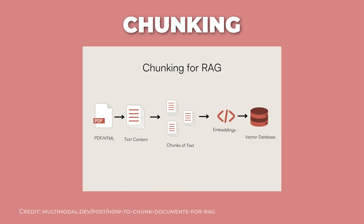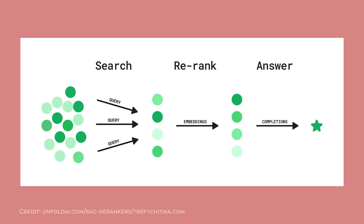Before documents go into the vector database, they get split up through chunking. You can't stuff an entire book into the model at once because of the context limit, so you break it into smaller pieces that are easier to search and process. If you go too big, you get a lot of irrelevant stuff. If you go too small, you lose important context. After finding relevant chunks, ranking puts them in order of usefulness. The best evidence goes to the top, which leads to shorter, clearer, and more accurate answers.